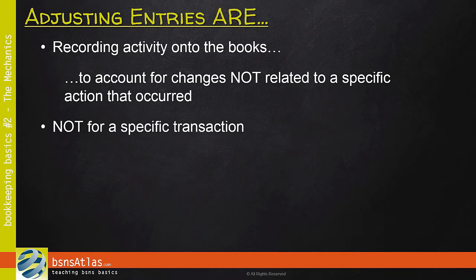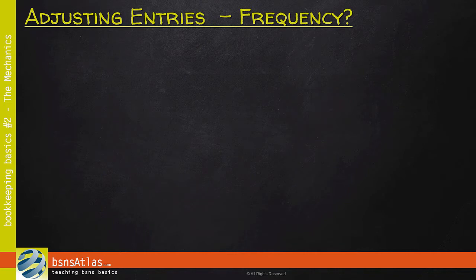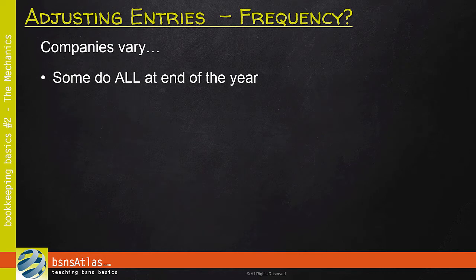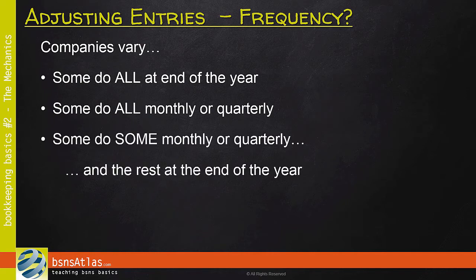As I explained in that previous lesson, there are several different reasons why this could happen, but the majority of them fall into a few specific categories. Different businesses handle the frequency of adjustments differently. Some only make the adjustments at the end of the fiscal year. Others make all of them either monthly or quarterly. And others make some monthly or quarterly, and the rest at the end of the year. Just understand that there are different options.